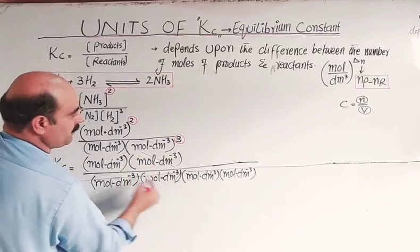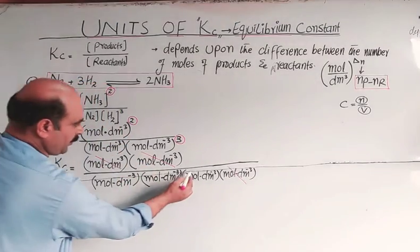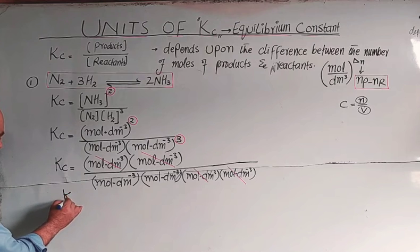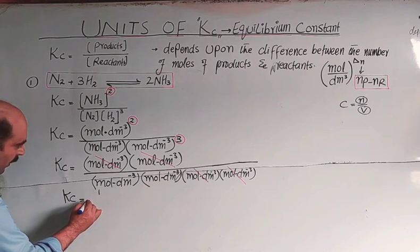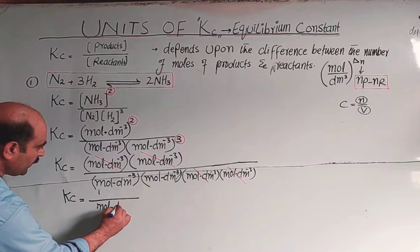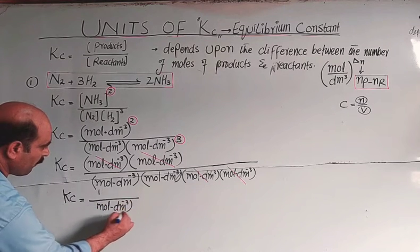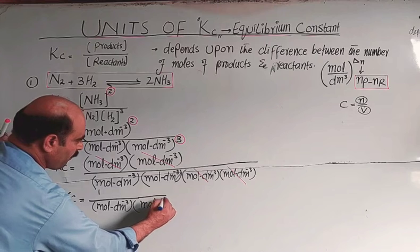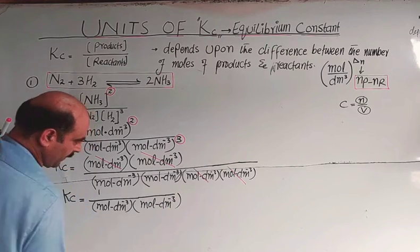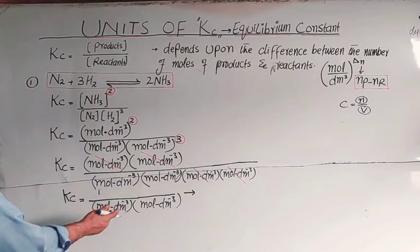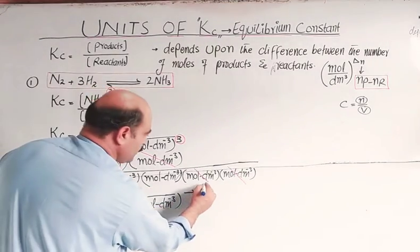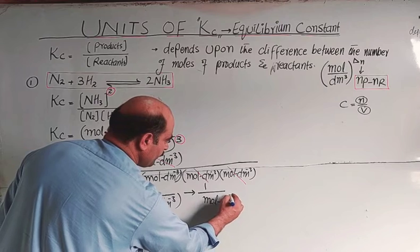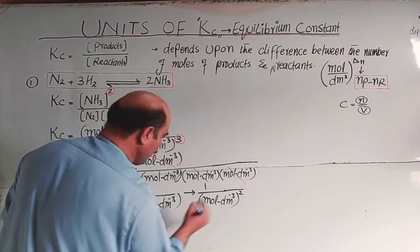After cancellation, Kc equals mole per decimeter cube times mole per decimeter cube. Because multiplication adds powers: mole to the power one times mole to the power one gives mole squared; decimeter cube power minus three times minus three gives minus six. So the unit simplifies to one over mole squared per decimeter cube, whole to the power two.